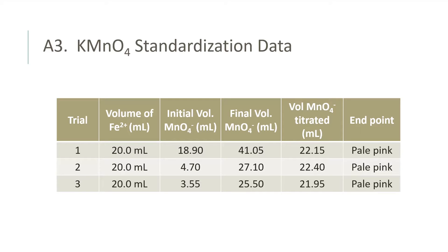A3: Potassium Permanganate Standardization Data. In this data table, rows are separated by trial number. The second column shows the volume of the iron 2+ solution, which should be constant. The third column shows the initial volume of the permanganate solution in the burette. The fourth column is the final volume in the burette of the permanganate solution. The fifth column is the volume of permanganate solution used in the titration. And the sixth column is the color description of the endpoint.